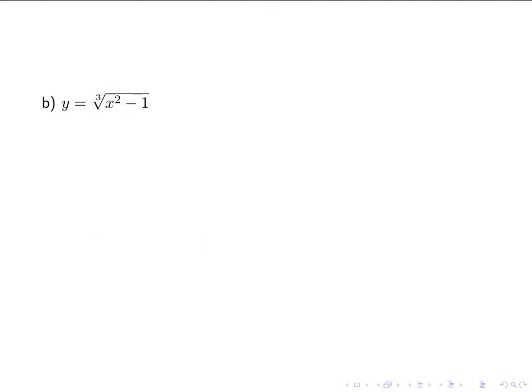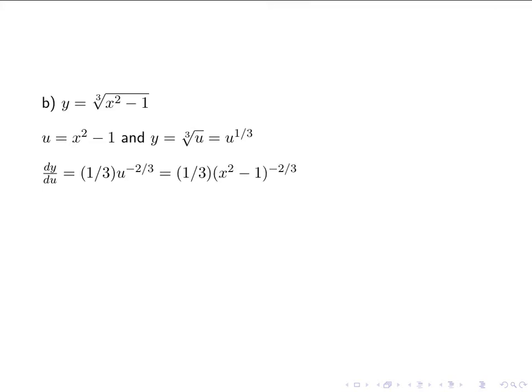Let's try another one: the cubed root of x squared minus 1. We're going to let u be x squared minus 1, the function that's being raised to the power, and y is the cubed root of u. We need to remember that the cubed root really is a power — it's to the power of 1 third. So dy/du, by the power rule, gives us 1 third u to the negative 2 thirds, which becomes 1 third times (x squared minus 1) to the negative 2 thirds. du/dx is 2x, again by the power rule.